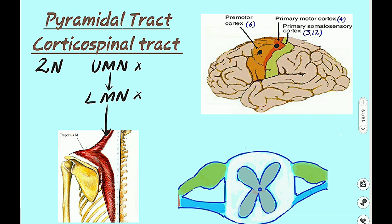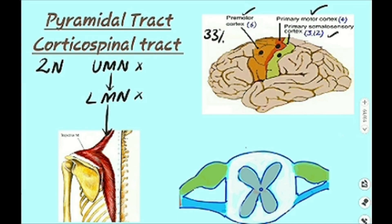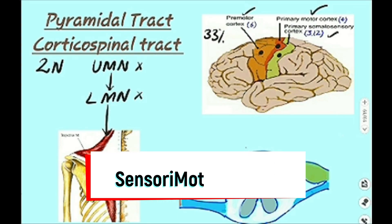Interestingly, the upper motor neuron cell bodies are also present in the sensory cortex. In fact, the upper motor neuronal cell bodies are present in three areas in equal ratio: 33% in the premotor cortex area 6, 33% in the primary motor cortex area 4, and 33% in the primary somatosensory area, which is areas 3, 1, and 2. This area has a special name — sensorimotor cortex — because the origin is from both motor cortex and sensory cortex.